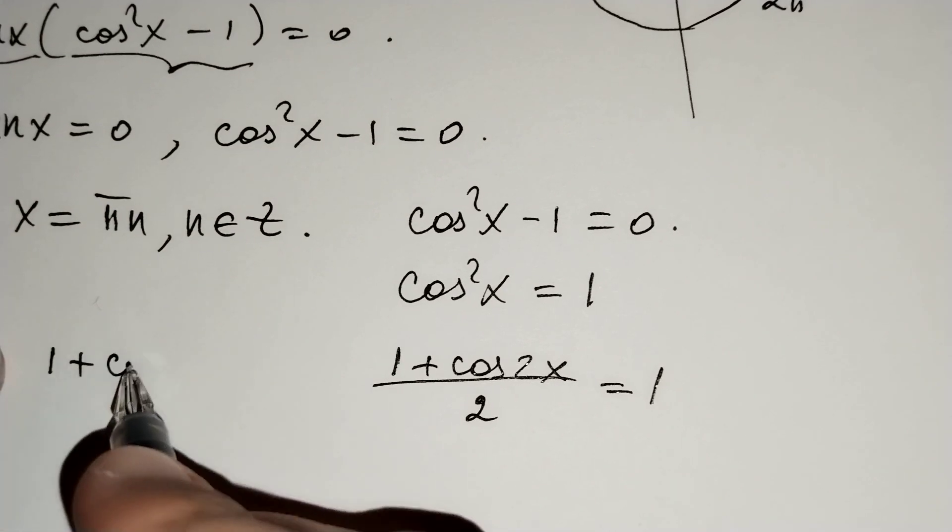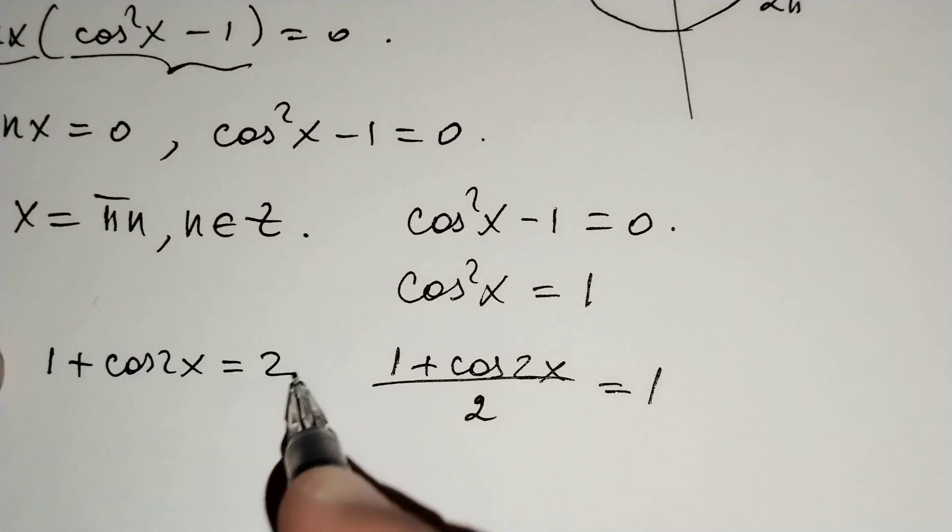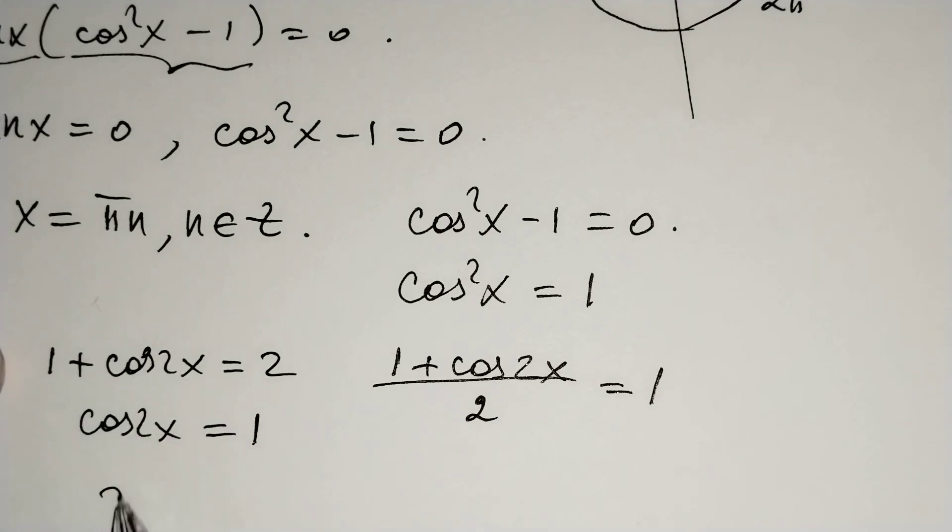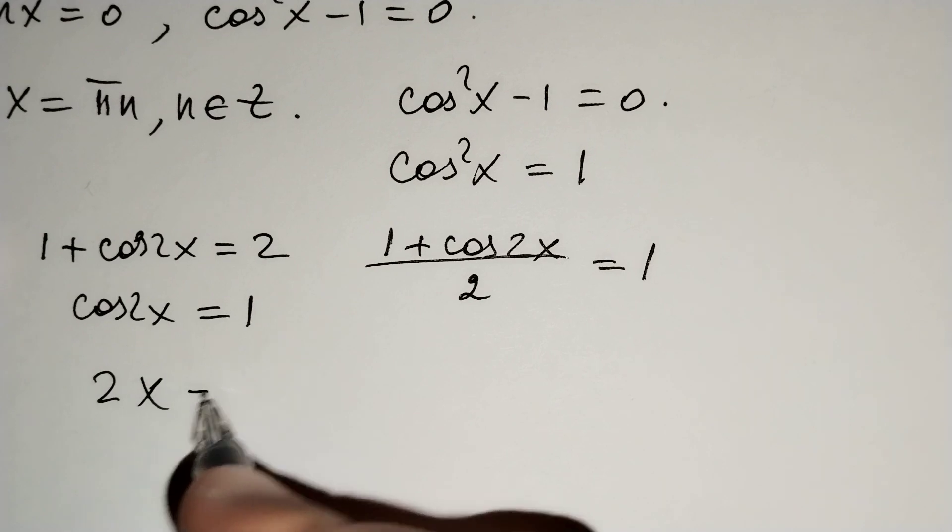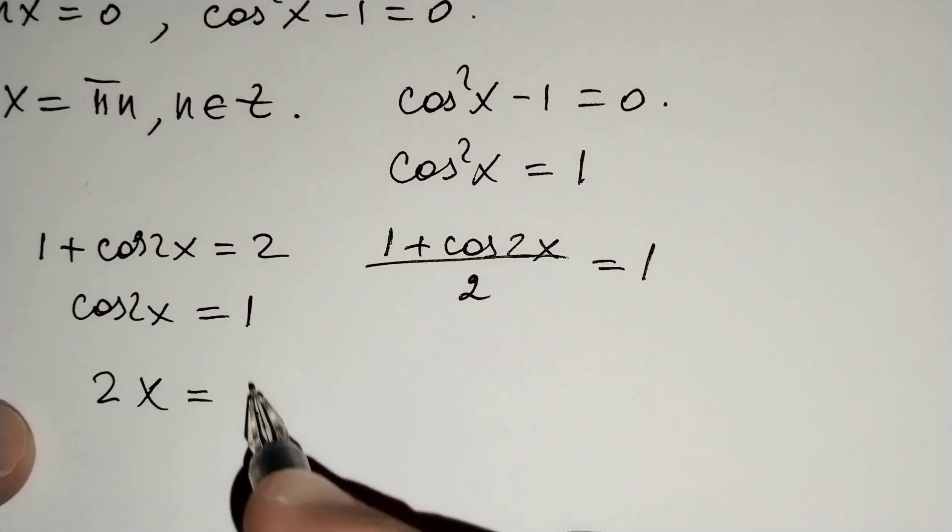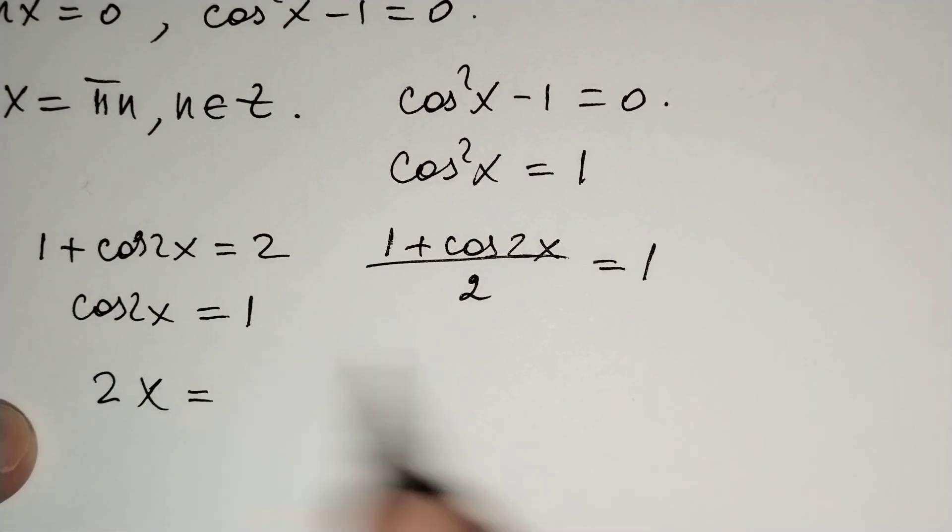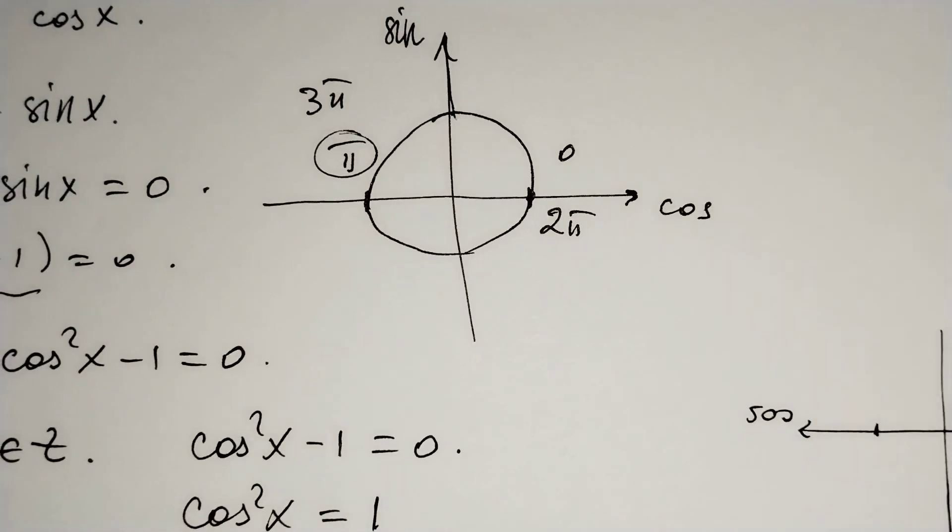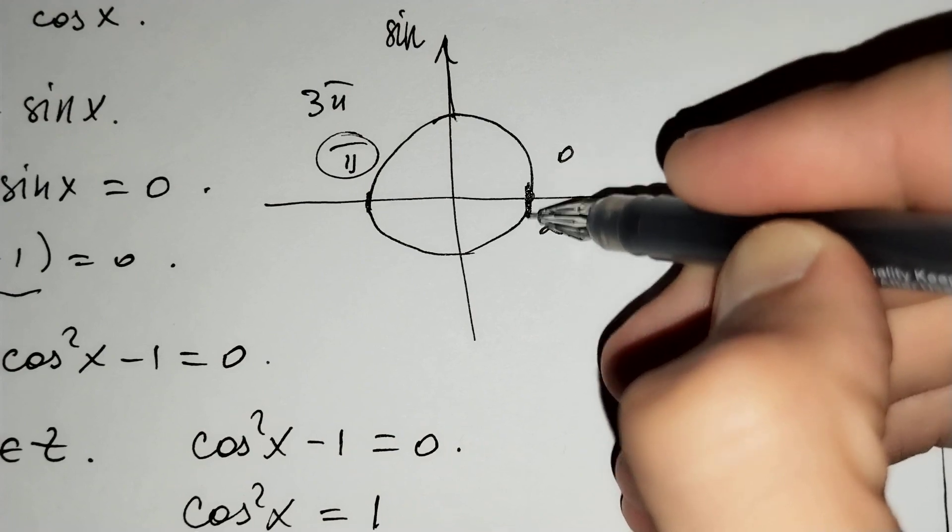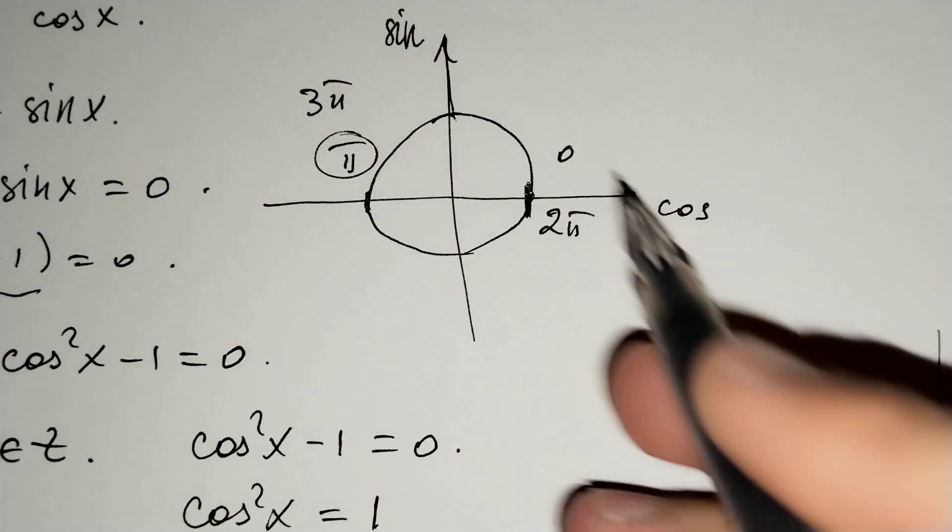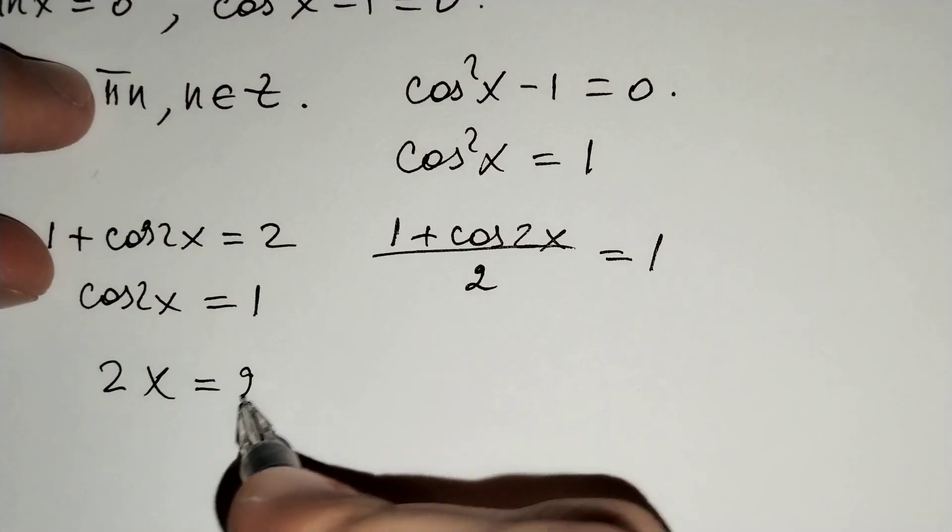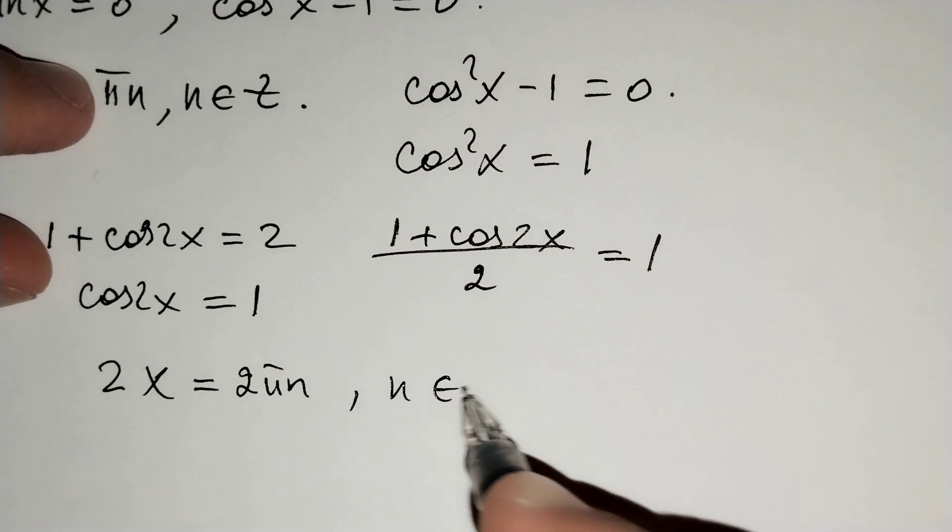1 plus cosine 2x equals 2, so cosine 2x equals 1. Cosine equals 1 at this point on the unit circle. This occurs at 0, 2 pi, 4 pi, etc., which gives us 2x equals 2 pi n, where n belongs to the integers.